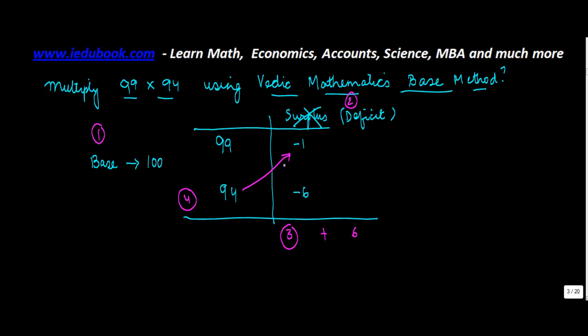But here you have a deficit, so you just subtract it. So 94 plus minus 1 will give you 93. You multiply this 93 with the base, just like you did earlier.